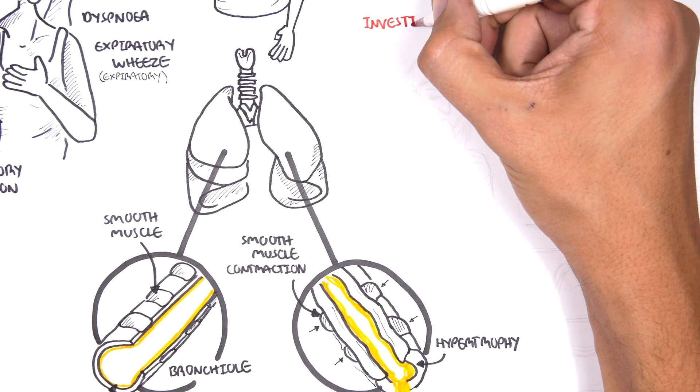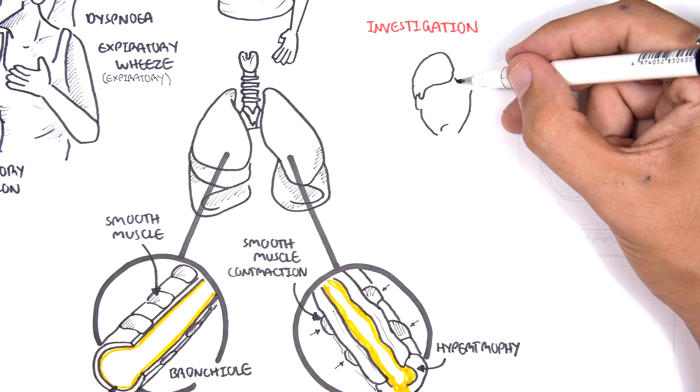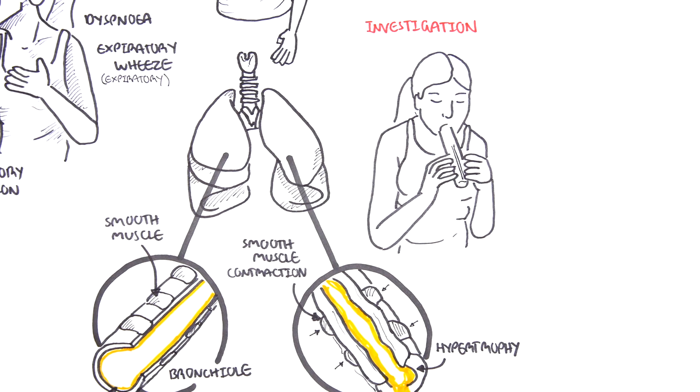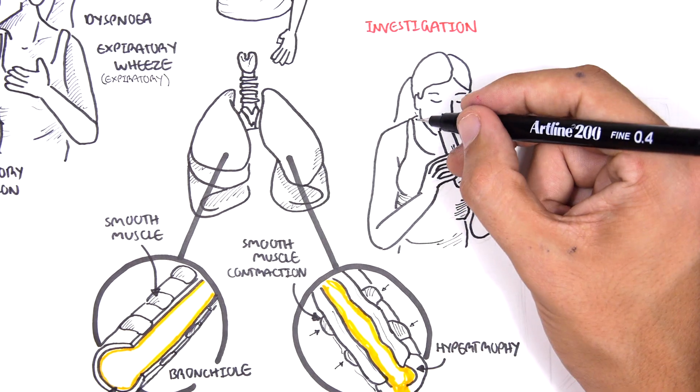Investigations for asthma, gold standard is measuring the peak expiratory flow rate, which is a test that measures how fast a person can exhale, can breathe out.